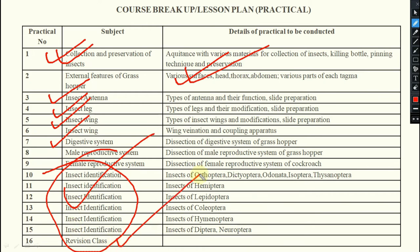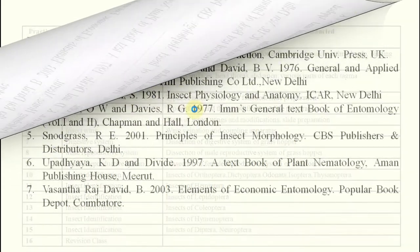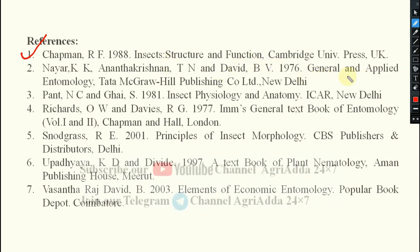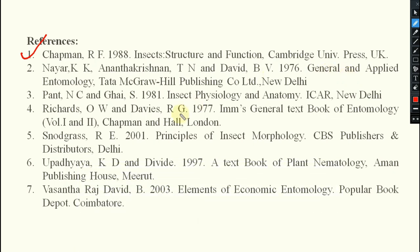At the end we will have a revision class covering both theory and practical topics. For references, there are several books: RF Chapman's book is very important and good, though it may be difficult for basic study. KK Nair and TN Anantakrishnan's General and Applied Entomology is also good. NC Panth and S. Ghai's Insect Physiology and Anatomy, OW Richards and Davies, Snodgrass's General Textbook of Entomology — very important — and Basant Raj and David's Elements of Economic Entomology are also listed.